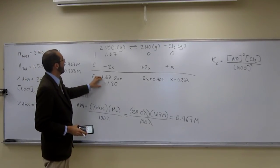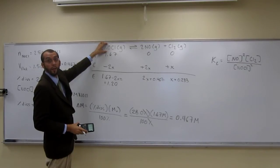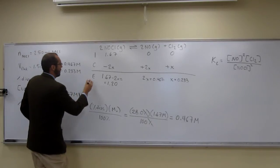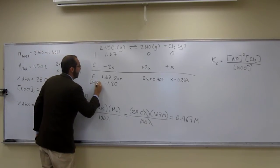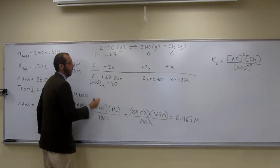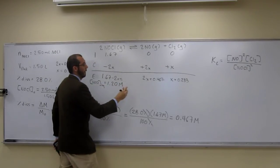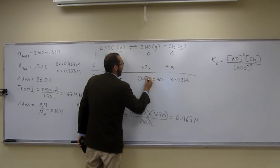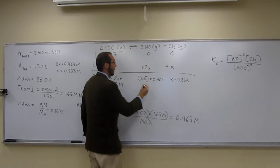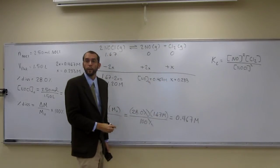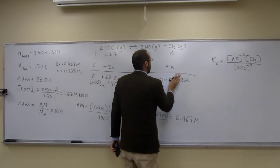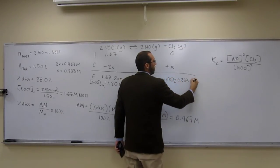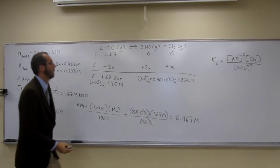So now we have the concentration of nitrosyl chloride at equilibrium. Is everybody okay with that? Let's write it out if you guys want to. This is NOCl at equilibrium. Molar. This is the concentration of NO at equilibrium. Molar.